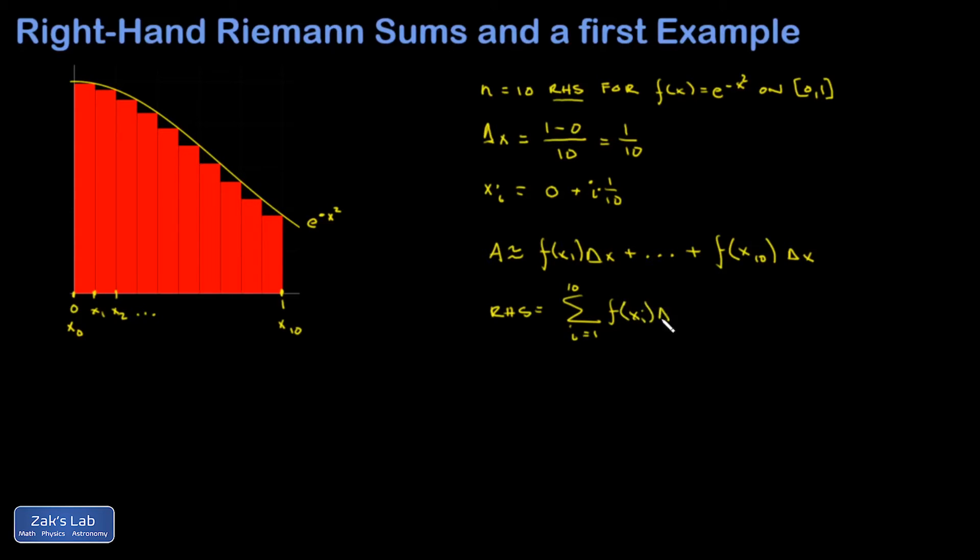Now I can plug in my actual function, and I get the sum as i goes from 1 to 10 of e^(-xᵢ²). Well xᵢ is i over 10, so e^(-(i/10)²) multiplied by delta x which is 1/10. Now I can evaluate this sum by using a computer algebra system or a TI calculator.